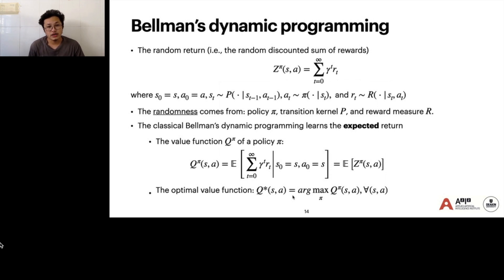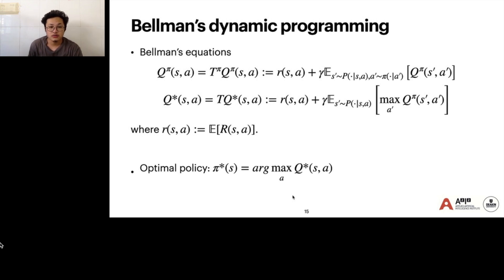The core of reinforcement learning is Bellman's dynamic programming. Here we have the random return, which is basically the randomly discounted sum of rewards. The randomness in this return comes from three sources: first from policy π, second from transition P, and the third is from reward distribution R. The classical Bellman's dynamic programming learns the expected return, which is the value function Q, which is the expectation of the return. We have the Bellman's equation to describe Q^π, and Q^π is the fixed point of T^π. We have the optimality Bellman equation T, and the optimal value Q* is the fixed point of T. The goal is to find Q* in Q-learning.